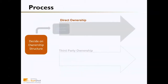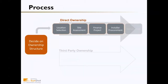There are a number of steps in the direct ownership process. The first is location selection; second is site assessment — where it's going to be located; third is financing the project; fourth is installer and procurement; and finally, installation and completion of the project. We'll run through each of these in turn.